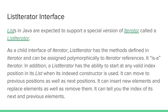But in addition, a ListIterator has the ability to be started at any valid index within a list. It can also move in the previous direction as well as in the next direction, and it has methods for modifying the list by inserting new elements, replacing existing elements, and removing elements both after a next call and after a previous call.